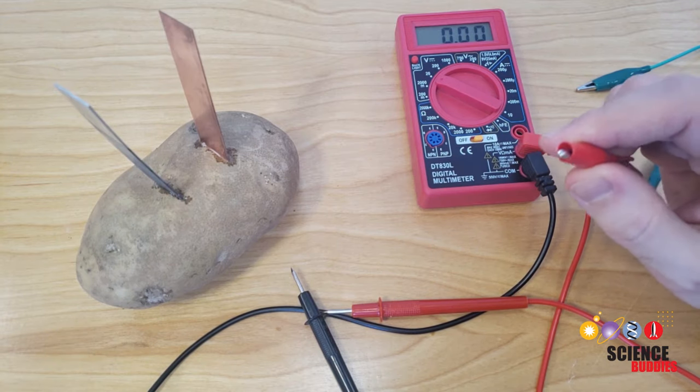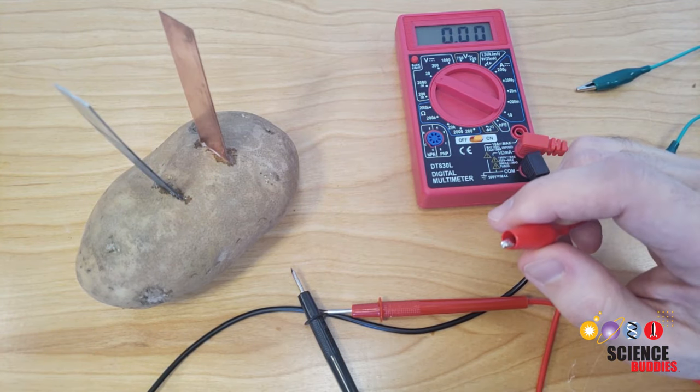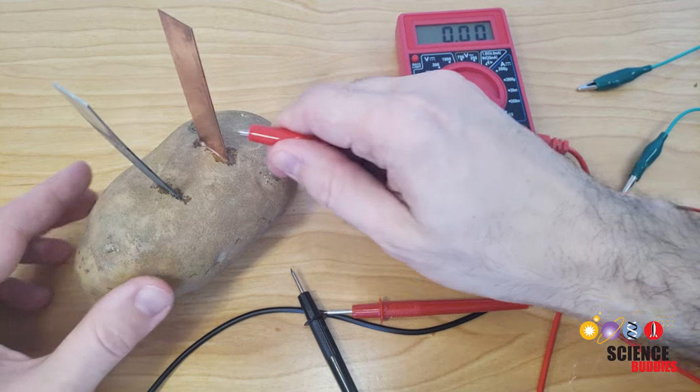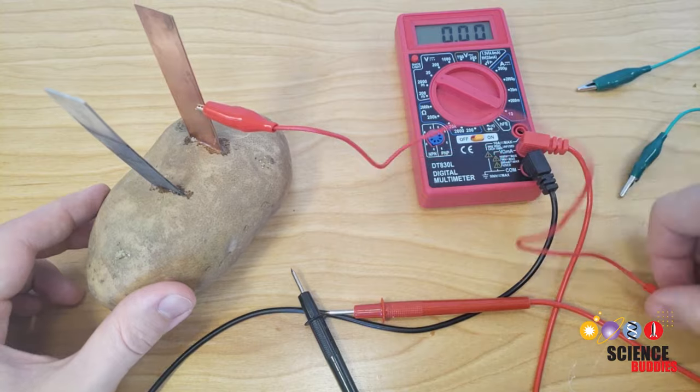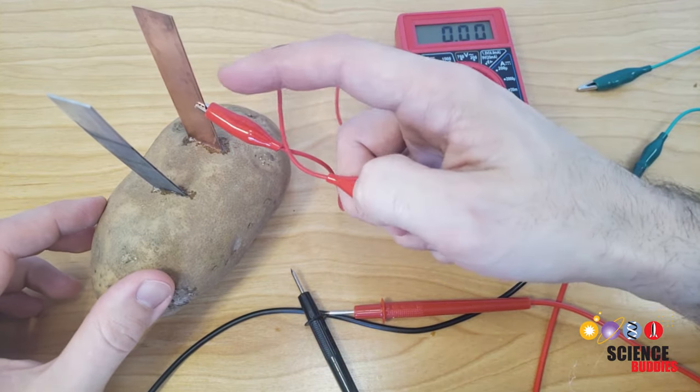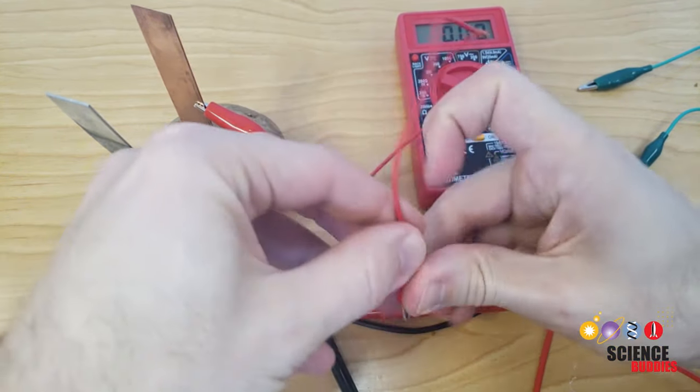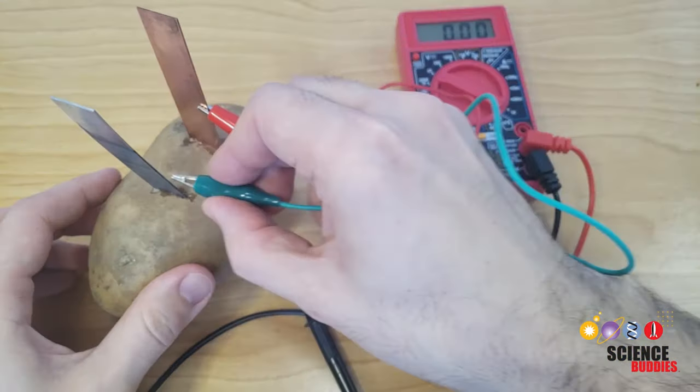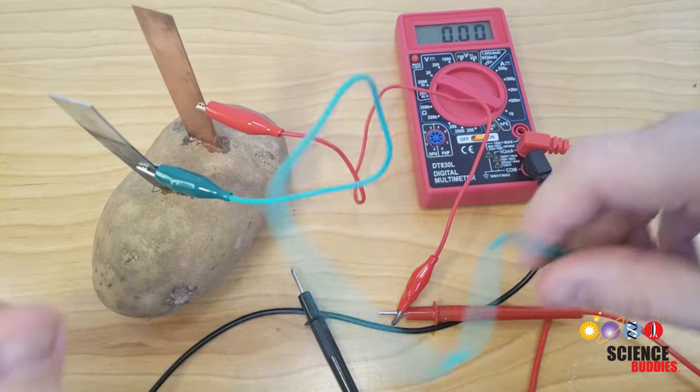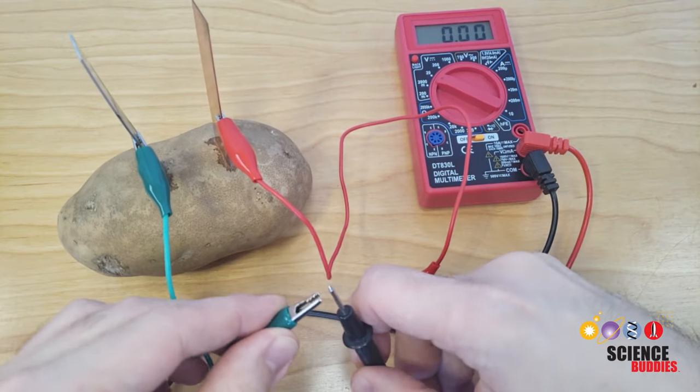This is where the alligator clips come in very handy because it can be nice to have your hands free when working with the multimeter, so you can connect these. Again, we usually use red for positive. You want to keep your color coding consistent, and use them to connect an electrode to the probe from the multimeter, and then that's going to leave your hands free to do other things.